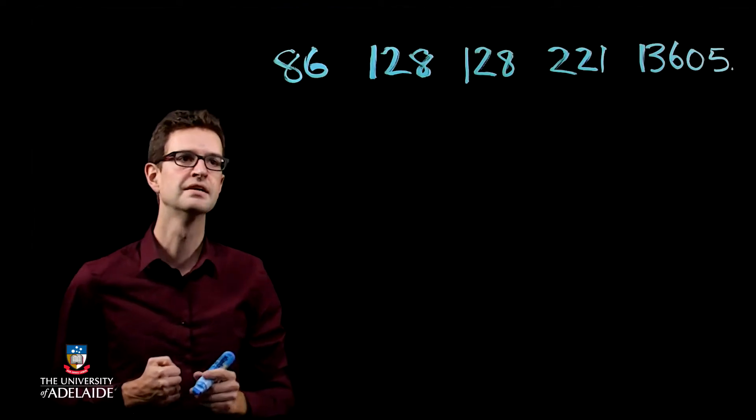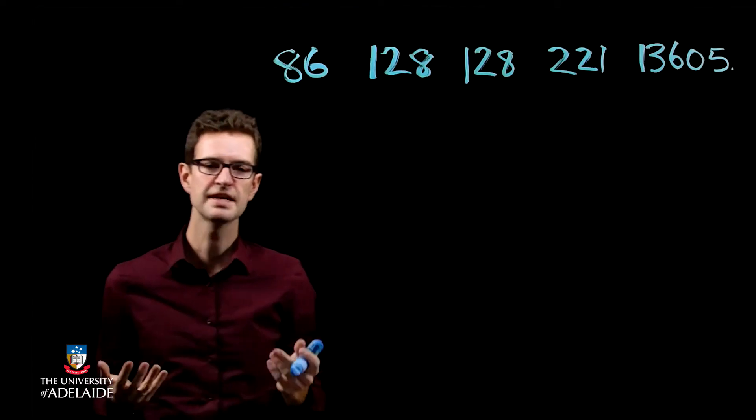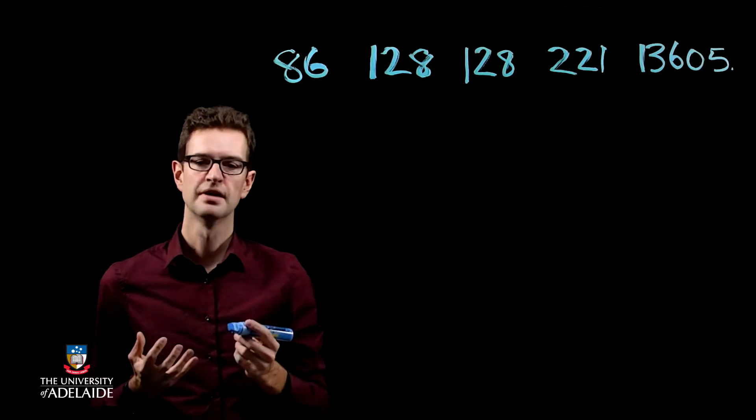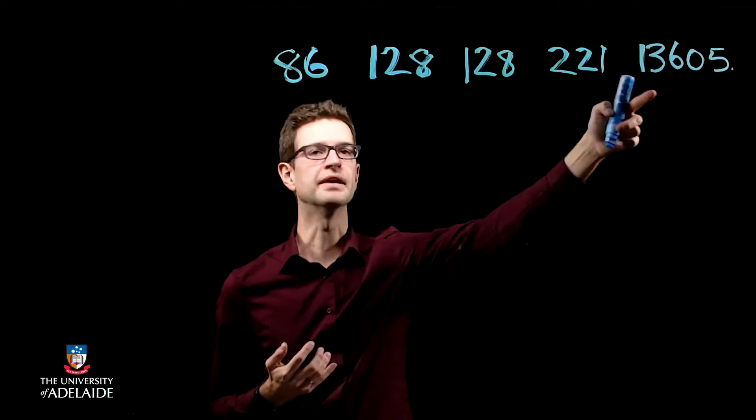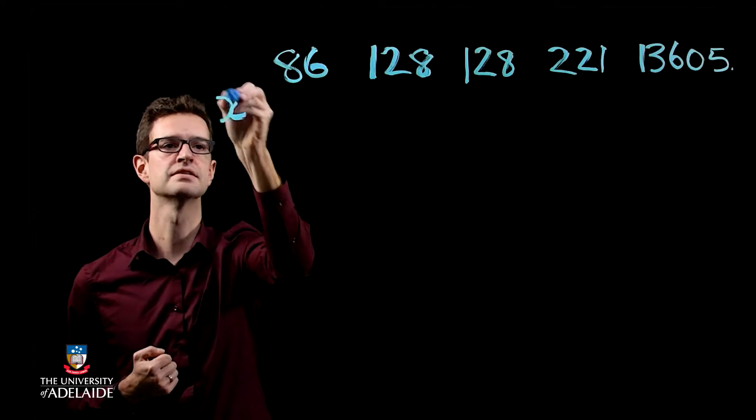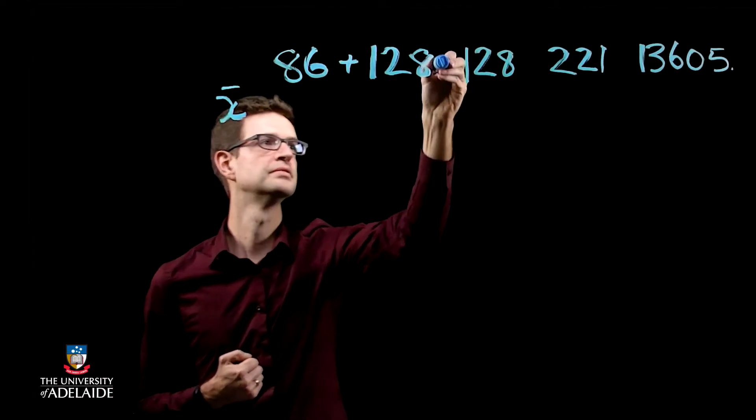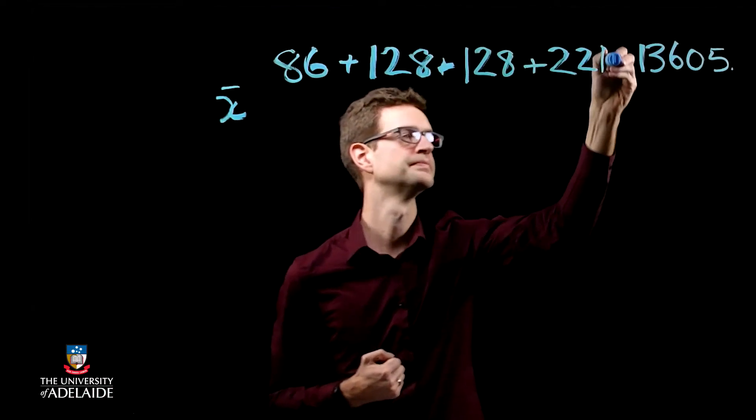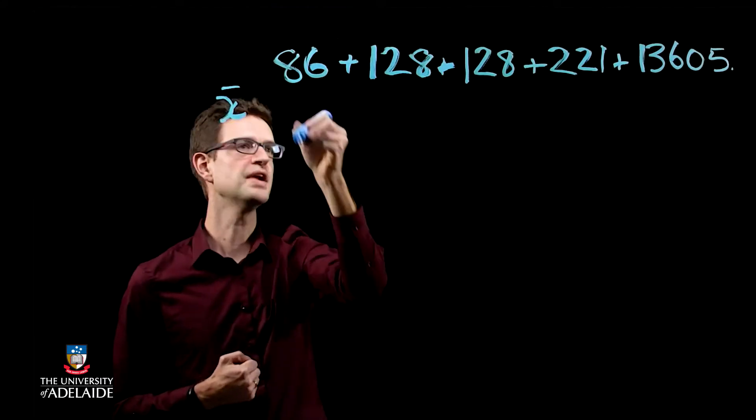So the first thing is to estimate the centre or the location of our population, you could use the sample mean. So that basically means just adding up these five numbers and dividing by the number of numbers.